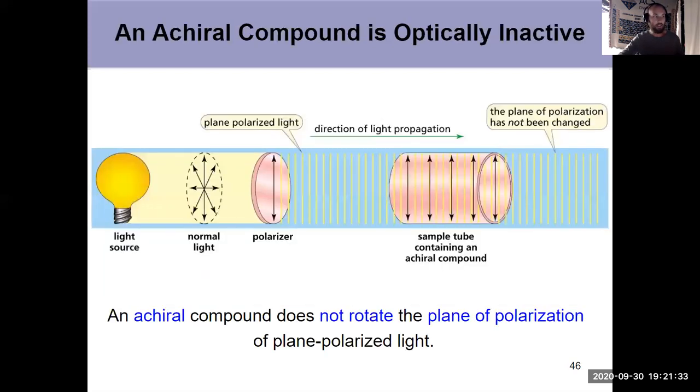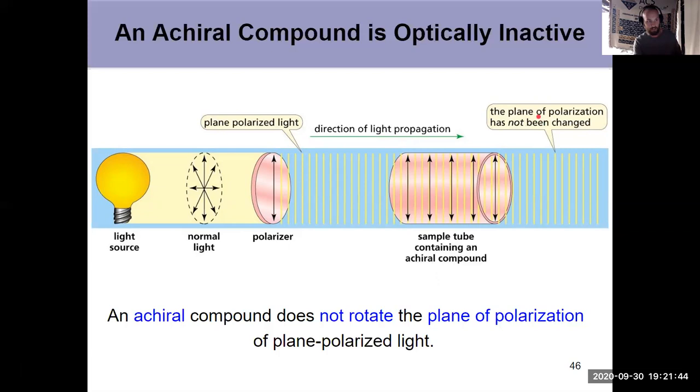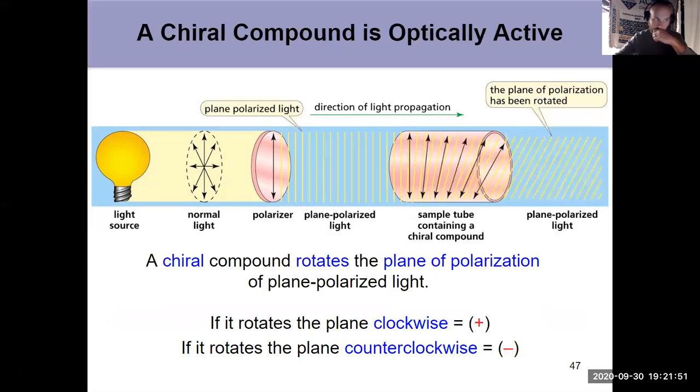And if I have an achiral molecule, it doesn't do anything to plane polarized light. An achiral compound just passes through, and the plane of polarized light has not been altered because it was an achiral molecule. But if I have a chiral molecule, any molecule that's chiral will rotate plane polarized light.